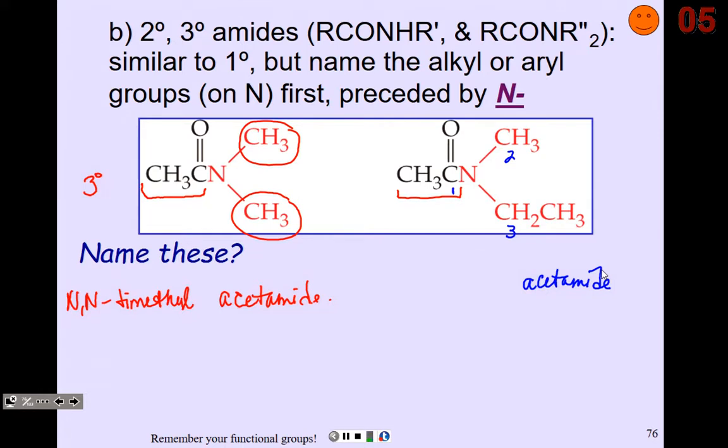One is methyl. One is ethyl. Again, alphabetical order is going to be your friend. They're both on nitrogen, so specify that. N-ethyl, N-methyl comes second because of alphabetical order. And then acetamide. Simple enough if you keep track of the fact that everything needs to be carefully described.